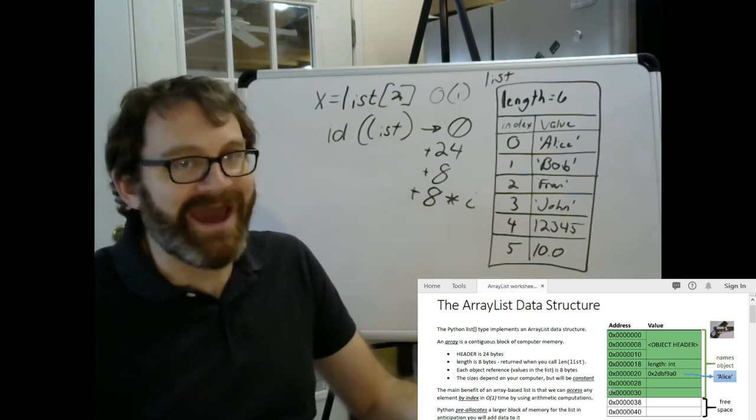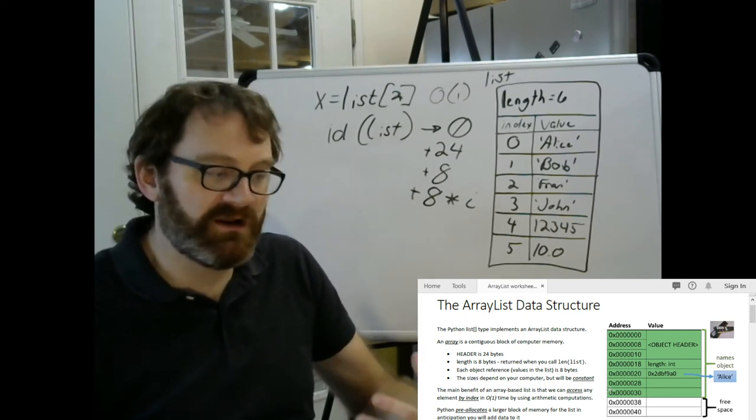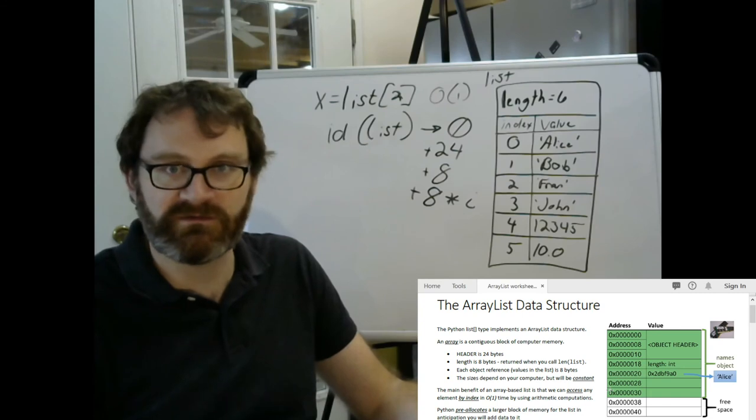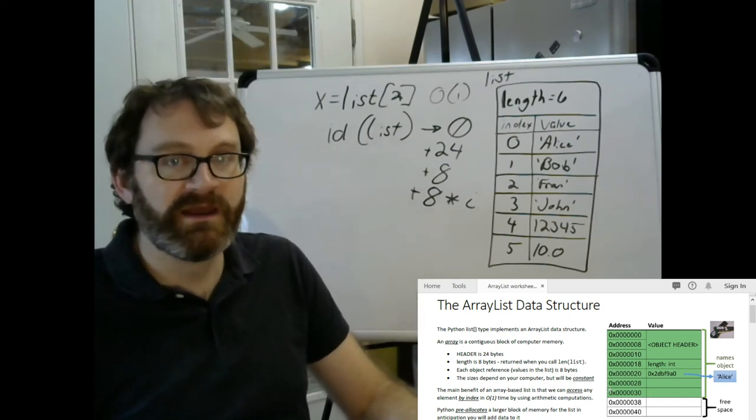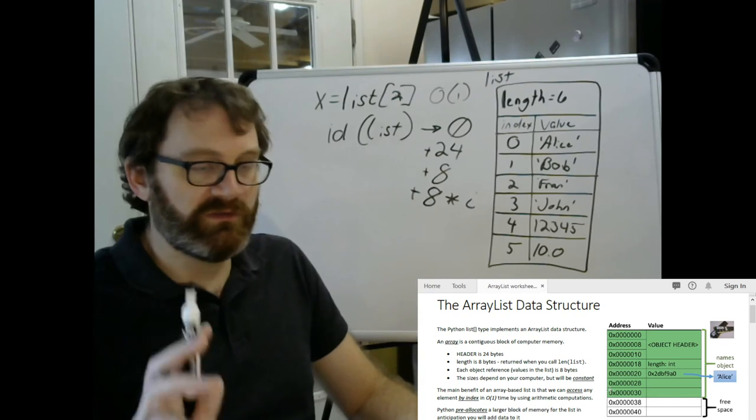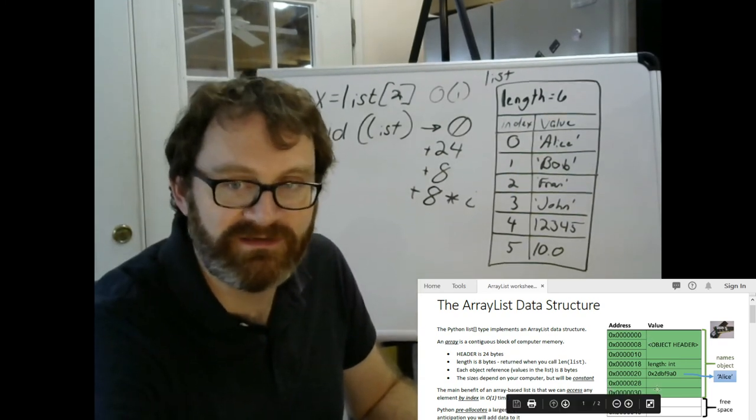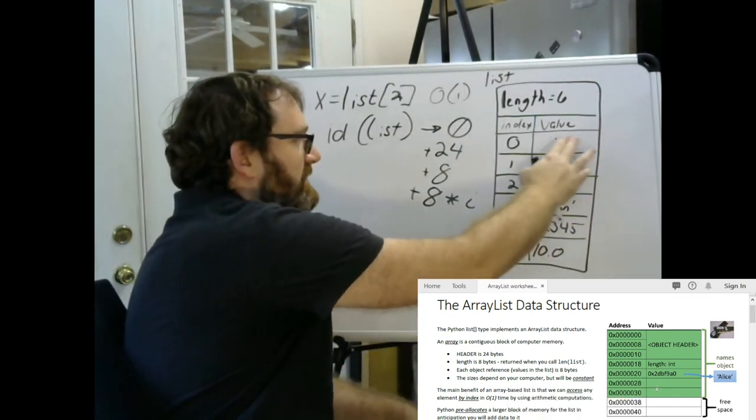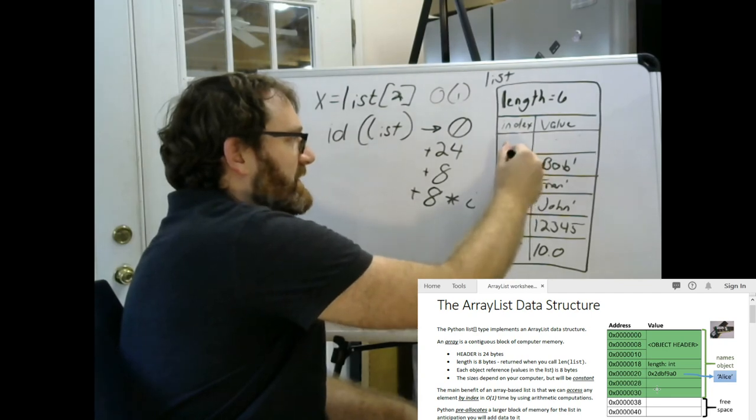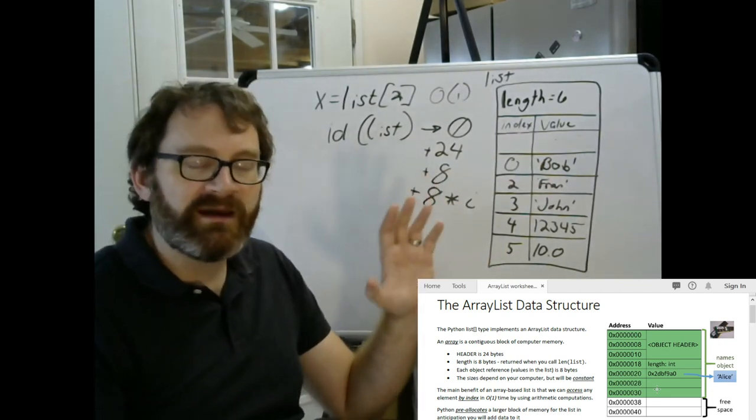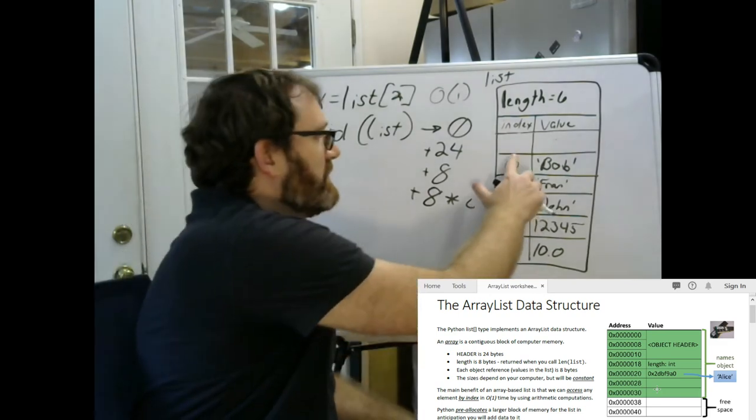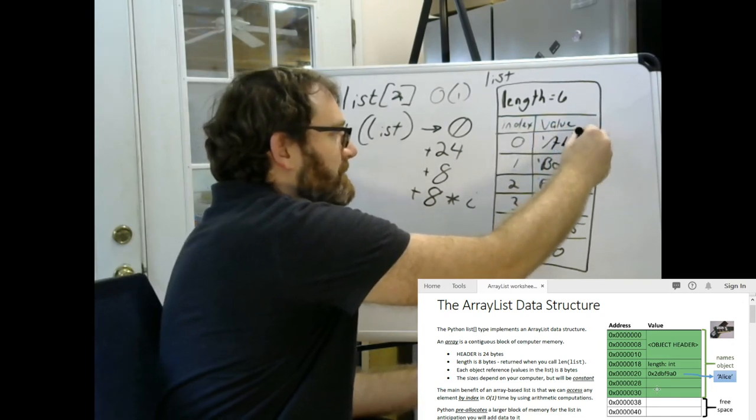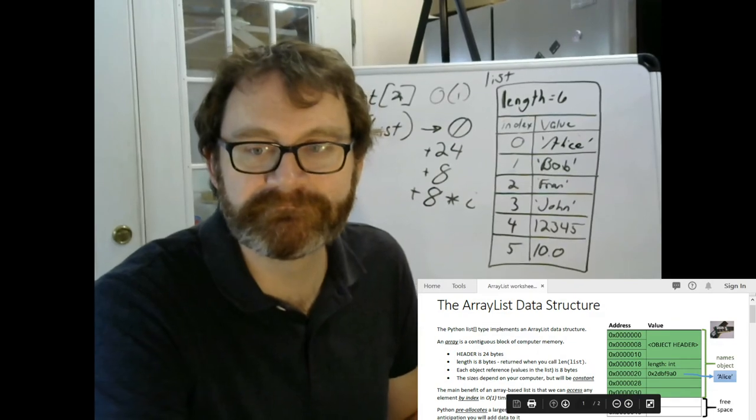So, by using math, Python is able to very quickly compute where something is in an array-based list. That's the power of the array. Now, it only works, though, whenever you have a contiguous block. If this was empty here somehow, and this was actually index zero, this wouldn't work. The math would not work out. This only works because the array is contiguous.